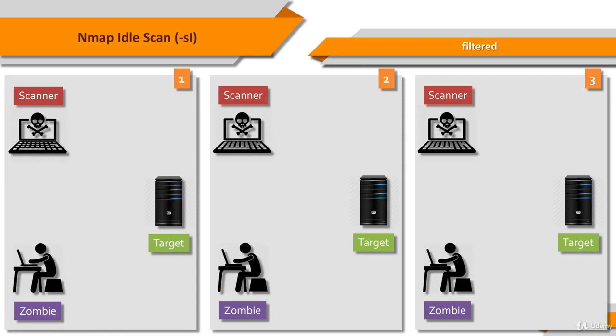Let's see what happens in an IdleScan if the target port is filtered. The first step is to probe the IPID of the zombie system. The attacker sends a SYN/ACK to the zombie, and since the zombie does not expect the packet, it sends back a RST with an IPID. The second step is to forge a SYN packet from the zombie to the target. The target, filtering its port, ignores the SYN that appears to come from the zombie. The zombie is unaware that anything happened, so its IPID remains the same.